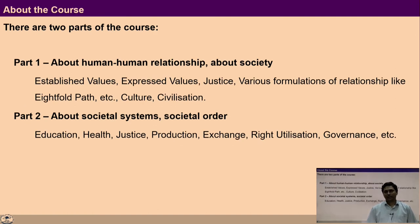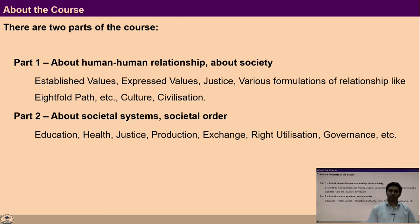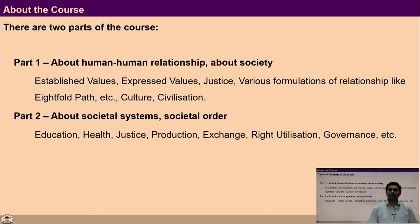There are conducive social structures and systems which help us to live a fulfilling, mutually fulfilling life. With this, we can say the whole course is divided into two parts. In part one we are going to discuss about human-human relationship, which is very important for a society. In this part we will talk about established values, expressed values, justice, various formulations given in relationships in our traditions like the Eightfold Path, then culture, civilization, and sanskar and its interconnectedness.